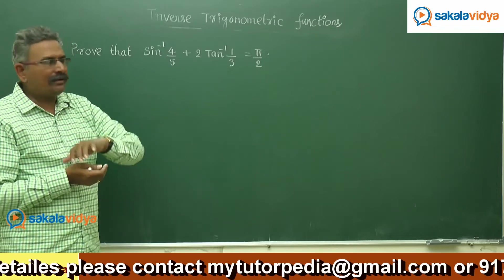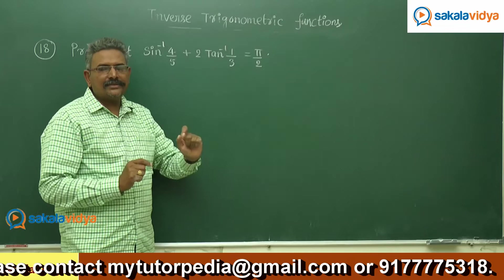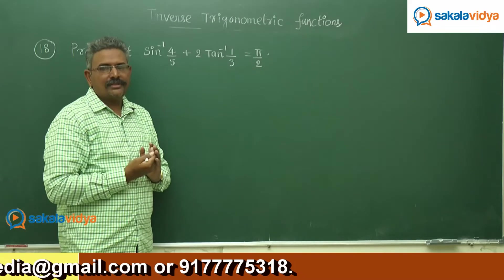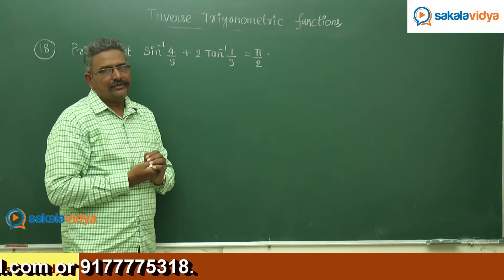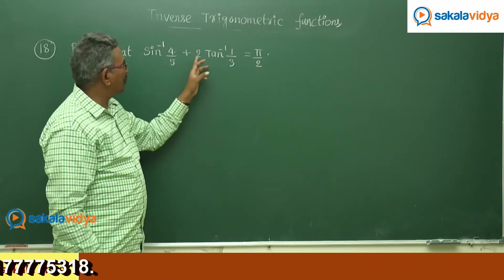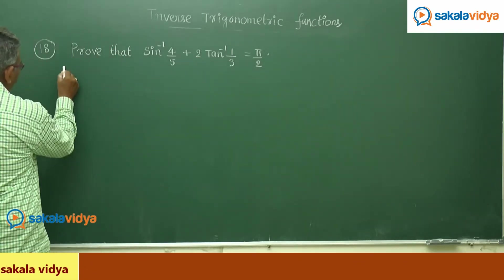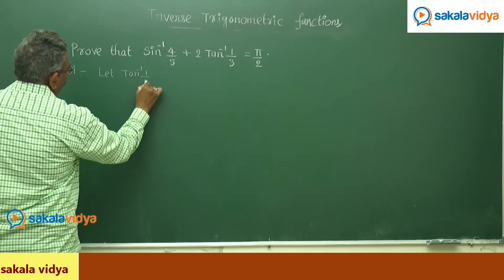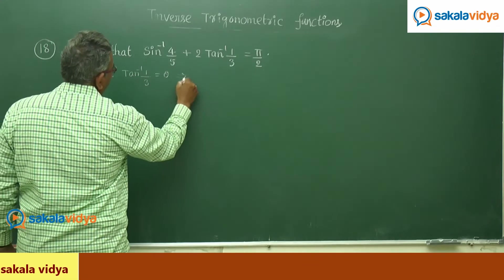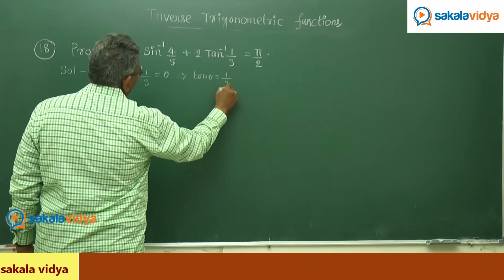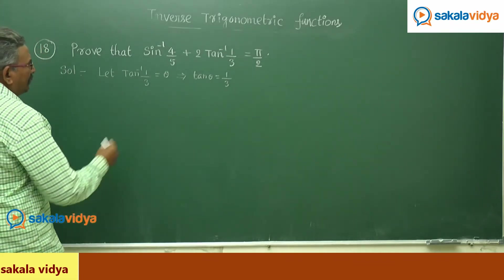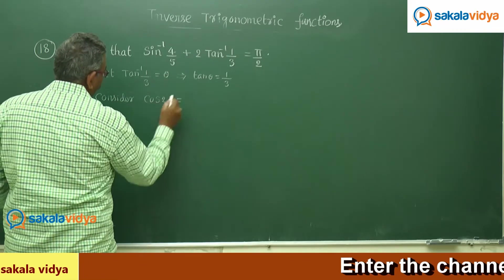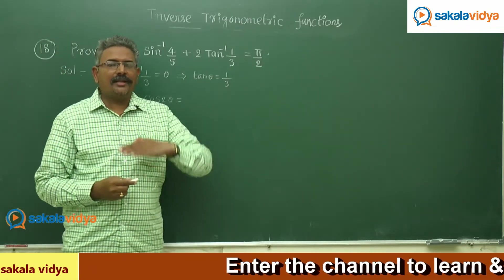Our emphasis is on 2 tan inverse 1/3. We have to convert it in terms of the cos inverse function so the problem can be solved easily. Let tan inverse 1/3 equal theta. Then tan theta equals 1/3, but here we have 2 theta. Consider cos 2 theta — it can be expressed in terms of tan, which is a very interesting factor.